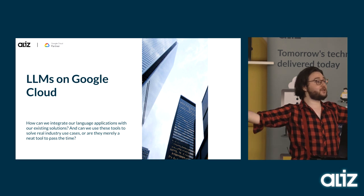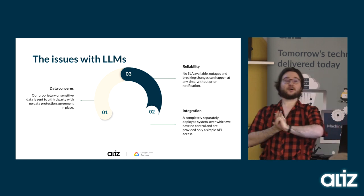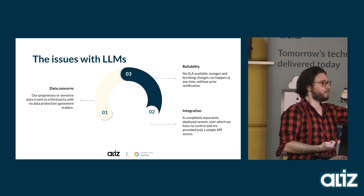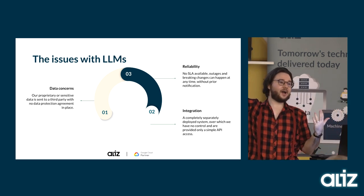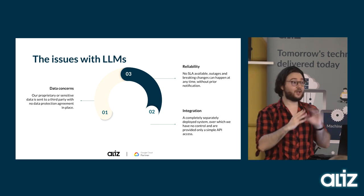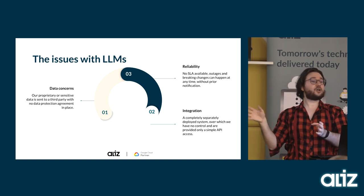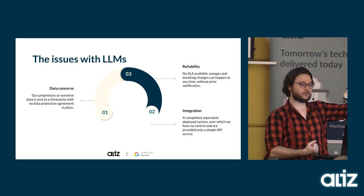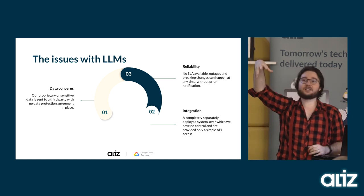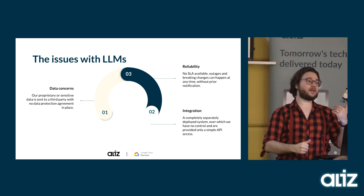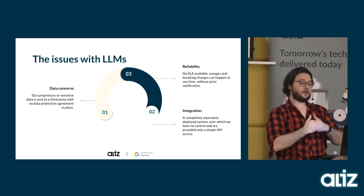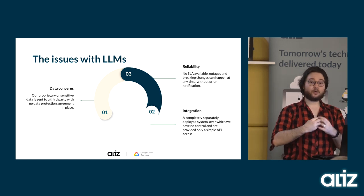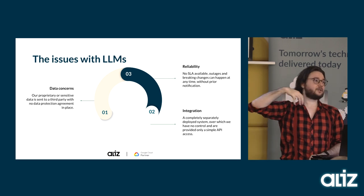Before we look at some real-world usage, there are some issues to address. Data concerns: we are sending sensitive, private, proprietary data to an external service — OpenAI. They don't even have a data protection agreement or a data protection officer. You have no idea what's happening with your data. Integration is also complex — we don't have control over the model, it's just an API somewhere out there. It isn't reliable: there can be outages, slow response times, and sometimes the API just won't respond. Any breaking changes can happen without notice.